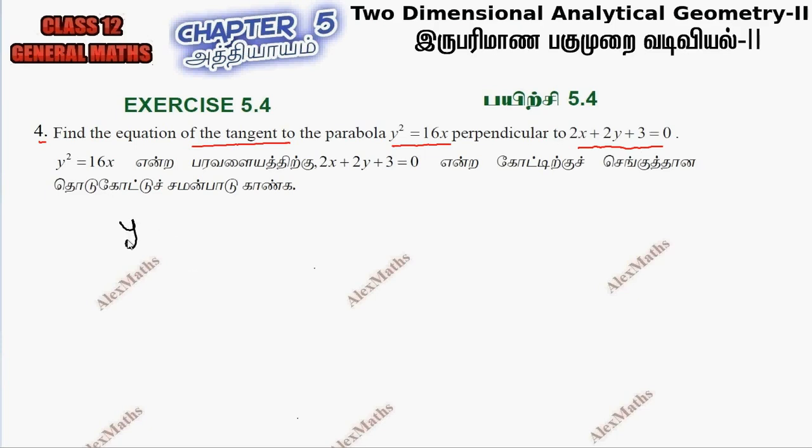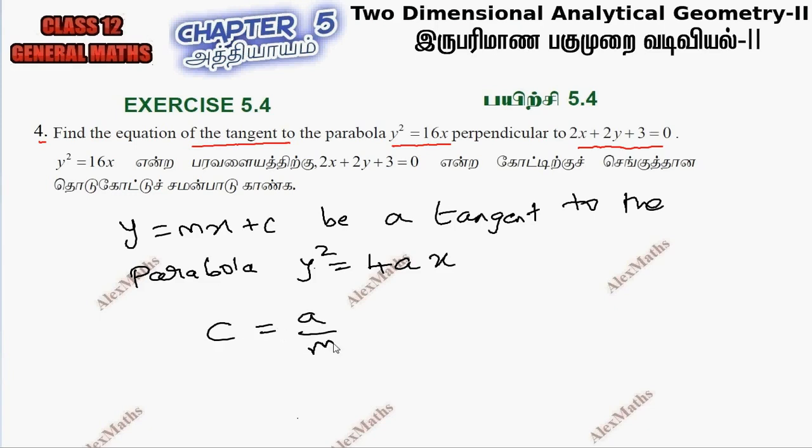Let y equal to mx plus c be a tangent to the parabola. For y square equal to 4ax, the condition is c is equal to a by m.